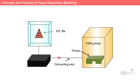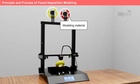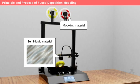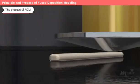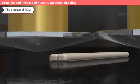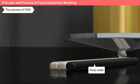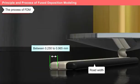The toolpaths for the build process are then generated and sent to the FDM machine. The modeling material comes in spools, similar to a fishing line. This filament is fed into the FDM machine's extrusion head, where it's heated to a semi-liquid state. The semi-liquid material is then precisely extruded through the head, one ultra-thin layer at a time, following the toolpaths created earlier. As the head moves on the XY plane, it builds up the desired layer, and when one layer is complete, the head moves on to create the next layer. The horizontal width of the extruded material, typically between 0.250 to 0.965 millimeters, is called road width and can vary from slice to slice.